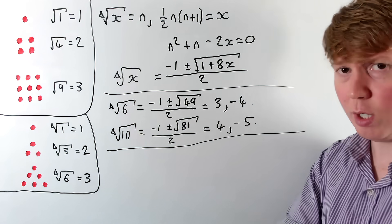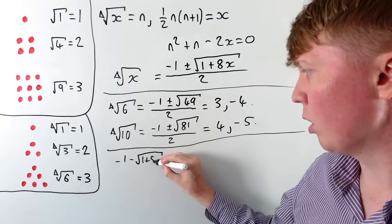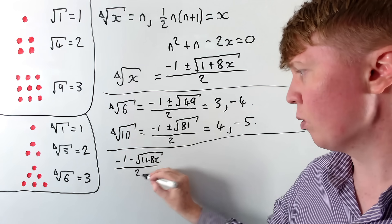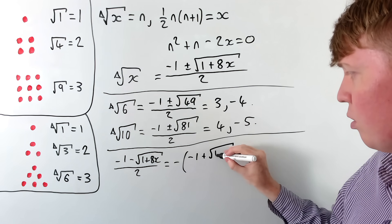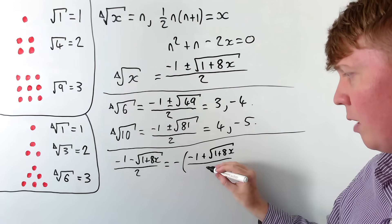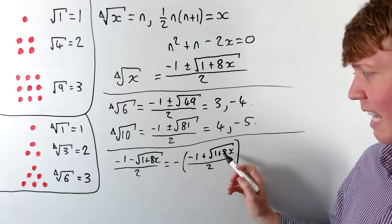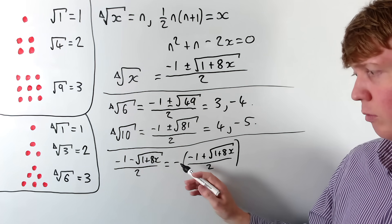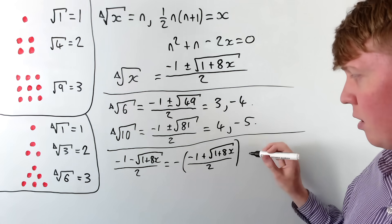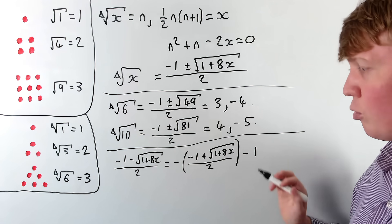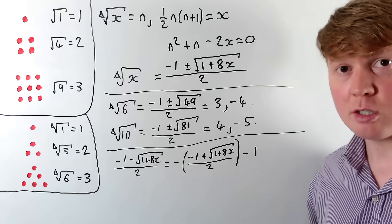There's a nice algebraic way of understanding this. The negative root is: negative 1 minus the square root of 1 plus 8x, divided by 2. Comparing with the positive root — negative 1 plus the square root of 1 plus 8x, divided by 2 — the square root parts match but we have negative one half on the left versus positive one half on the right. So to make them match, we subtract 1. This shows why the negative root is almost the negative of the positive root, but you have to subtract 1.